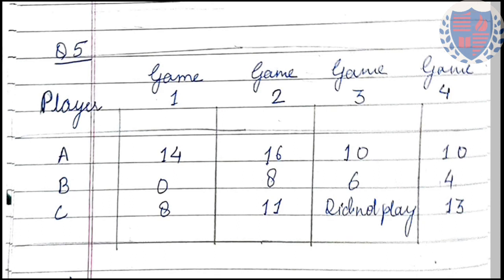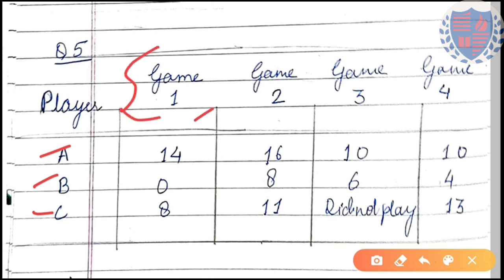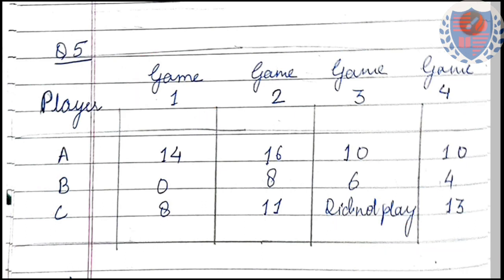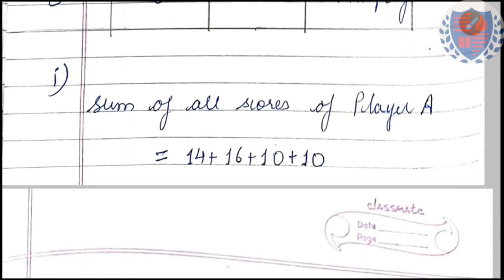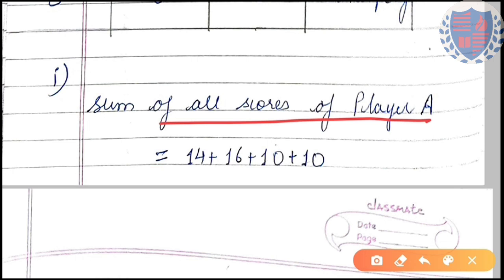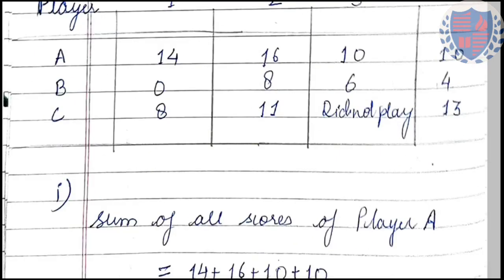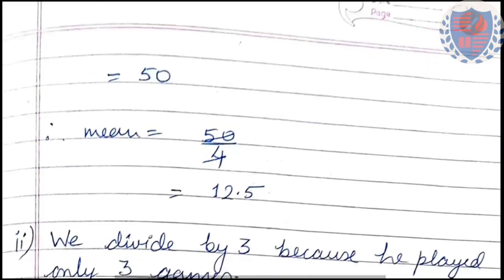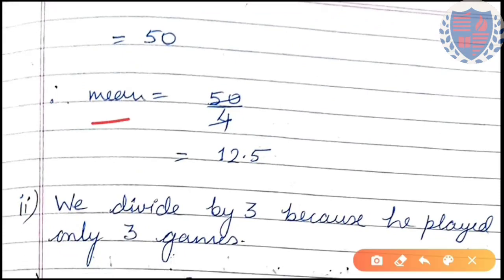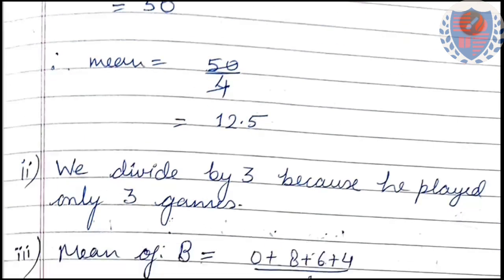Question 5: three players A, B, and C played four games. Player C skipped game 3 as noted in the table. To find the mean of player A, we add all of A's scores and get 50. Since they played four games, the mean is 50 divided by 4 = 12.5.